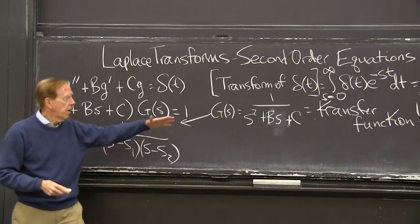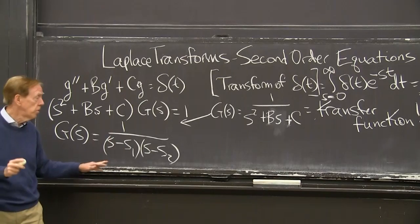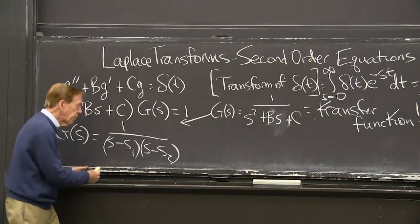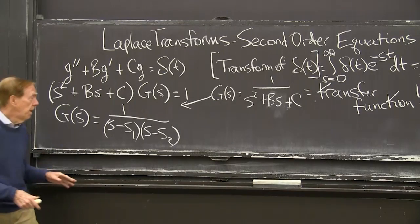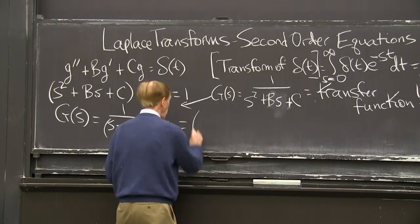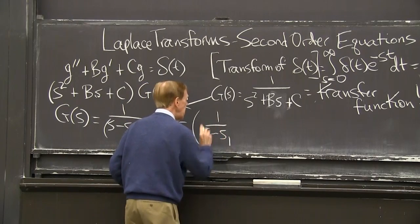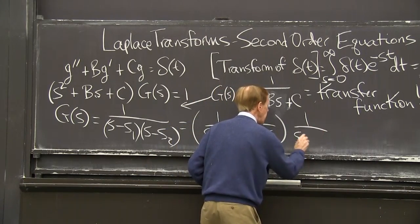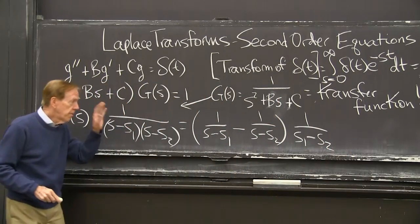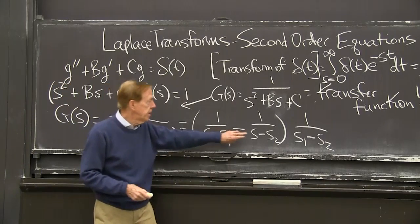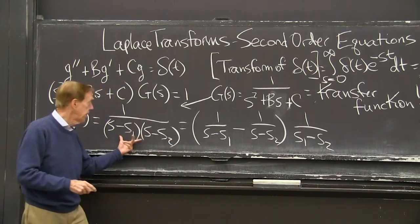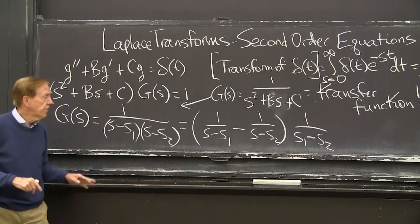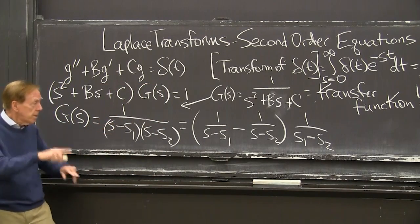Those are the two roots from the quadratic formula, the two poles of g of s. And now I want to use partial fractions. So I want to separate this into two fractions. And it turns out they are 1 over s minus s1 minus 1 over s minus s2, and there's a factor there to make it correct. You could check. When you put this over a common denominator, you get this. And when you put that over a common denominator, you'll get a numerator which you have to cancel.